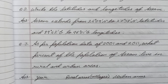Question number two: Write the latitudes and longitudes of Assam. Answer: Assam extends from 24 degrees 9 minutes North to 27 degrees 58 minutes North latitudes, and 89 degrees 42 minutes East to 96 degrees 1 minute East longitudes.